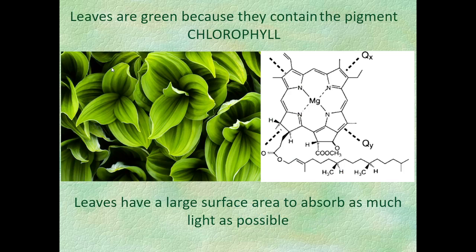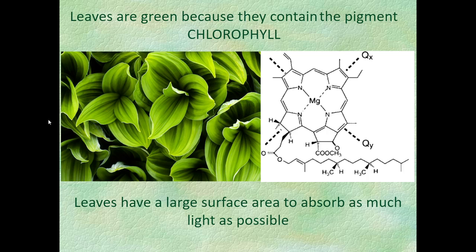Leaves are green because they contain a pigment called chlorophyll. Chlorophyll is a pigment that absorbs sunlight and uses that energy to do mechanical work. Leaves are designed for photosynthesis — that's all there is to it. They have as large a surface area as possible to absorb as much sunlight as possible. In the tropics where it never freezes, leaves can be very broad. Further north where it freezes, leaves can't be as big. In Canada, leaves are needles — that's as big as they can grow and still survive freezing.